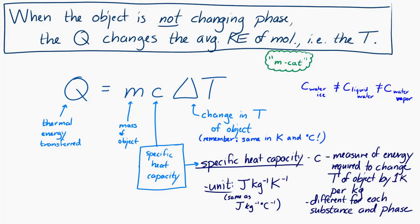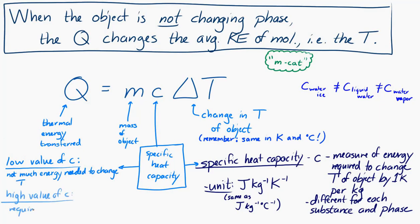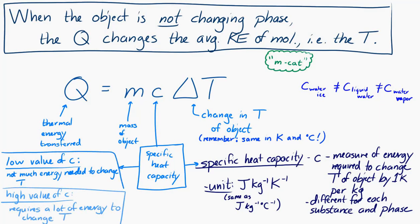A low specific heat capacity means it doesn't take much energy to change the temperature of the substance, whereas a high specific heat capacity means it takes a lot of energy. Aluminum is an example of a low specific heat capacity material — a little bit of energy will change aluminum's temperature a lot. Liquid water has a high specific heat capacity, meaning it takes an enormous amount of energy to change its temperature.